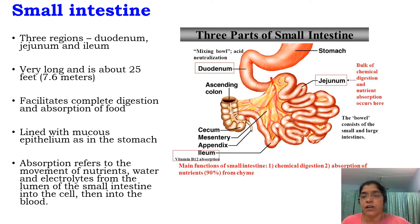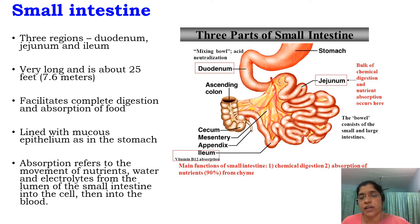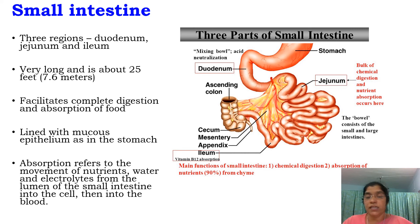The bulk of chemical digestion and nutrient absorption occurs here. The main functions of the small intestine are chemical digestion and absorption of nutrients. It absorbs about 90% of nutrients.